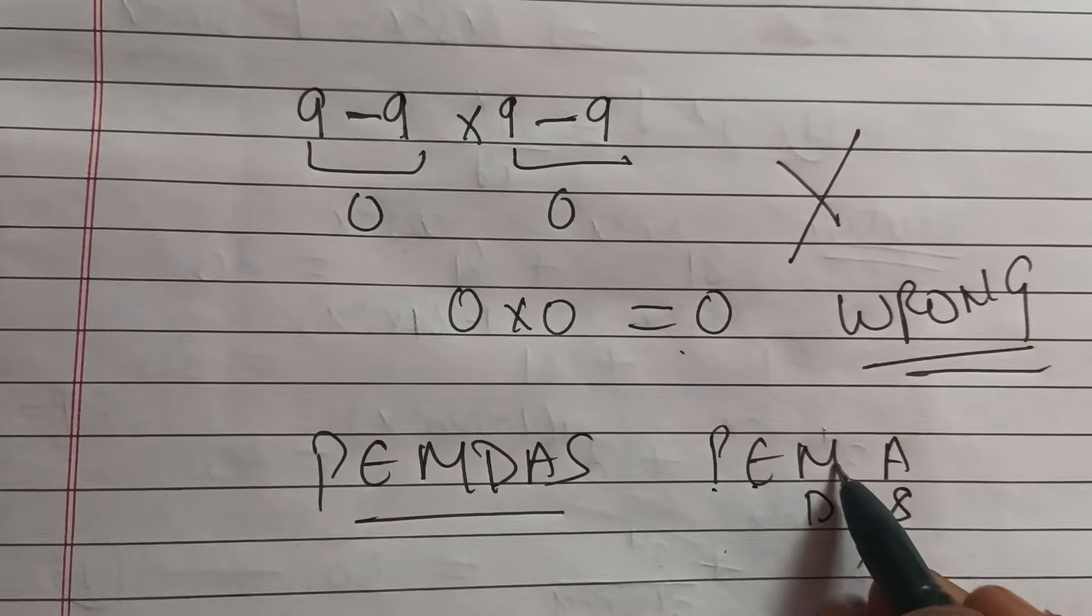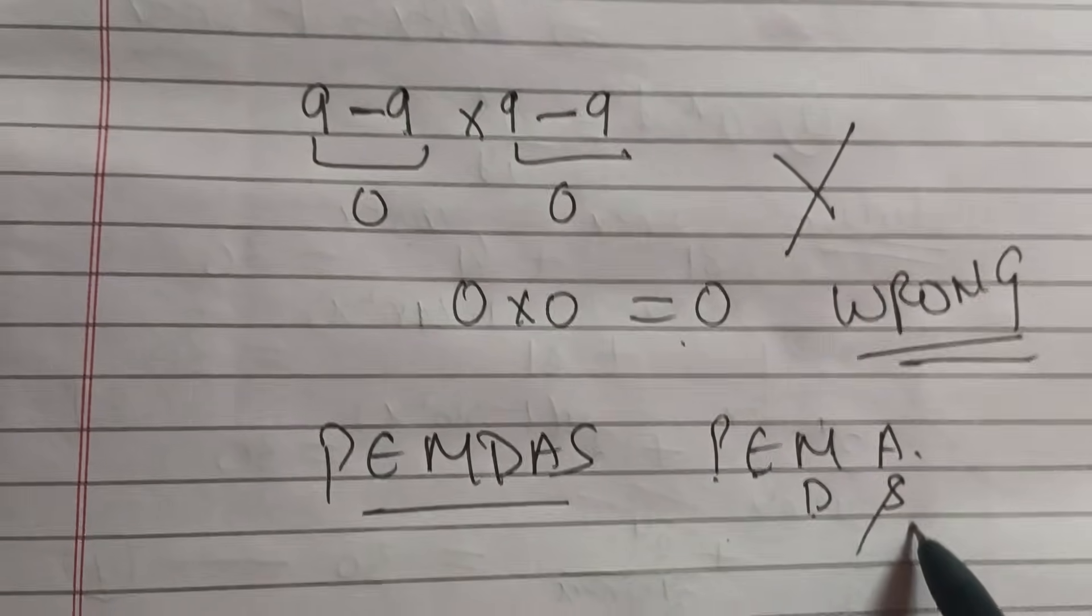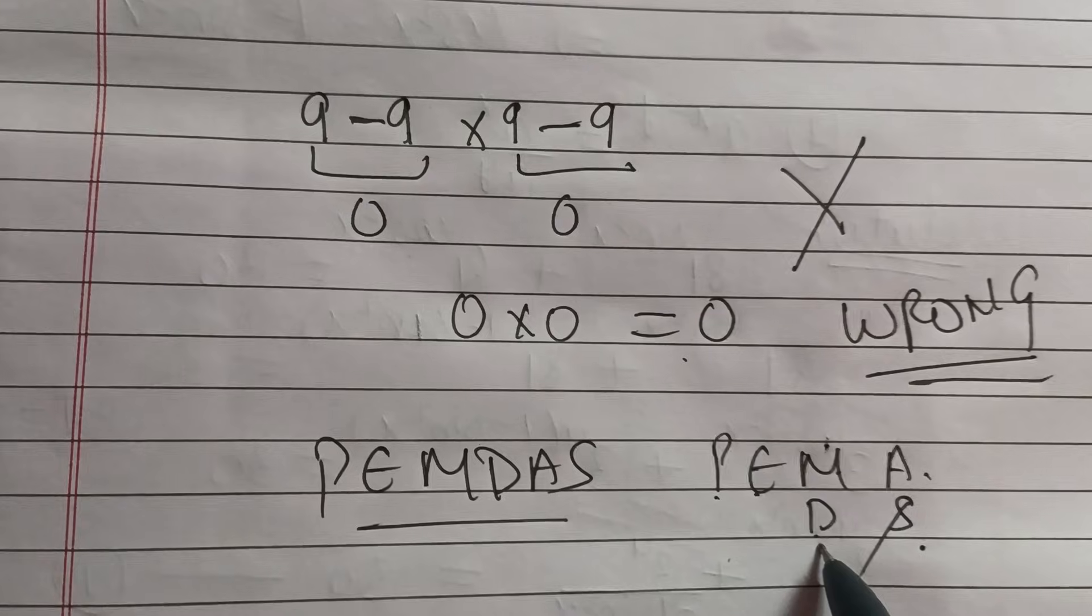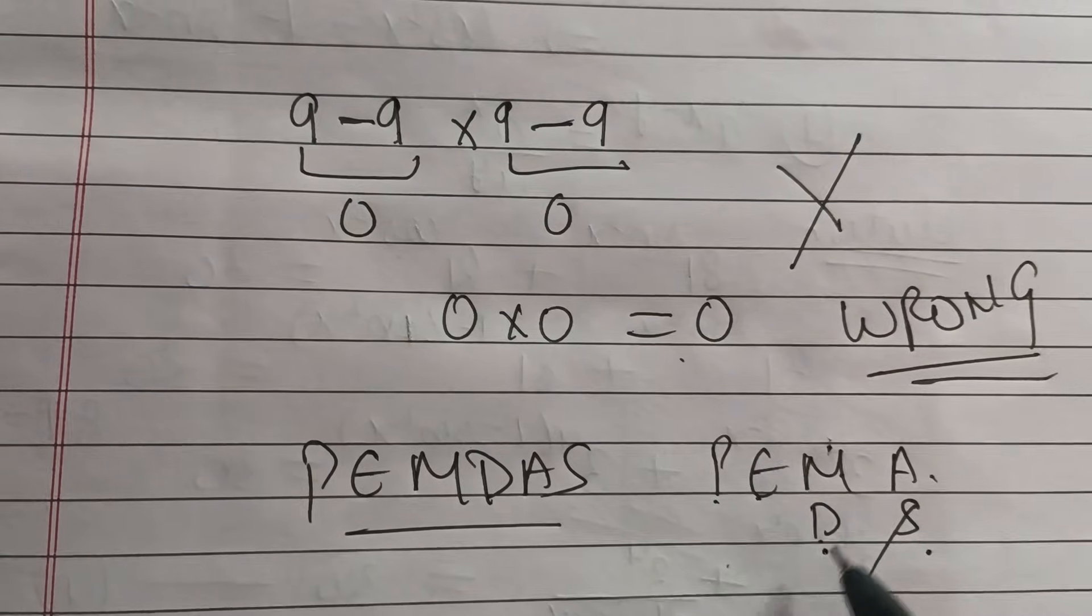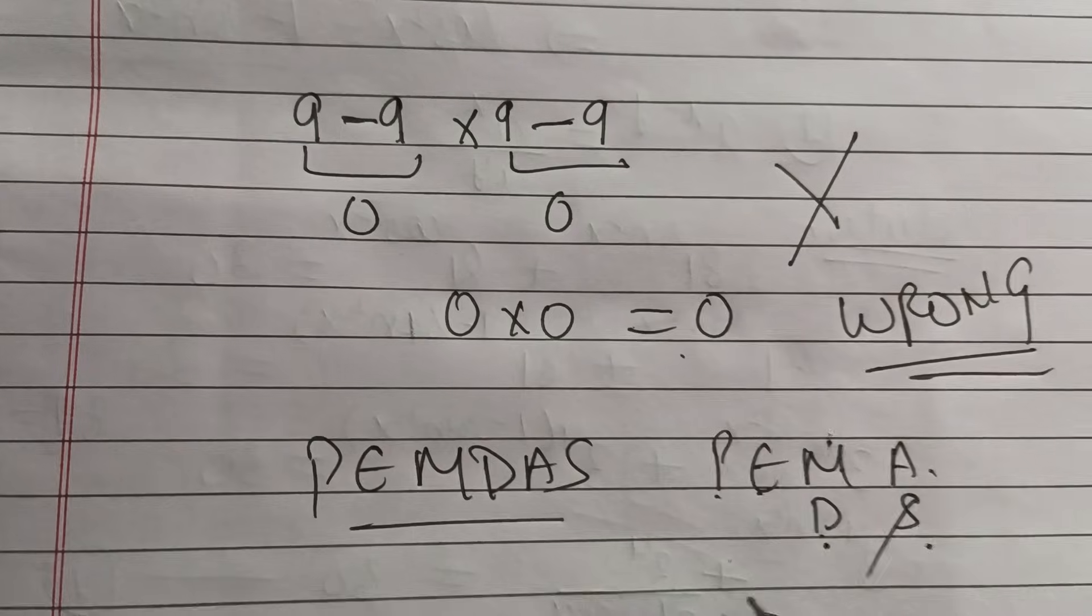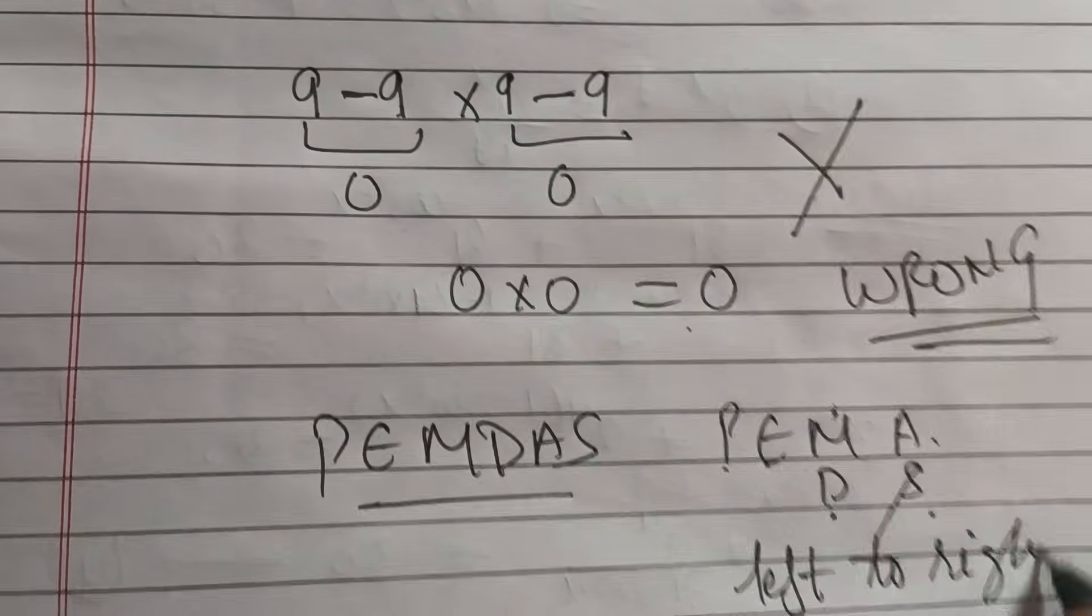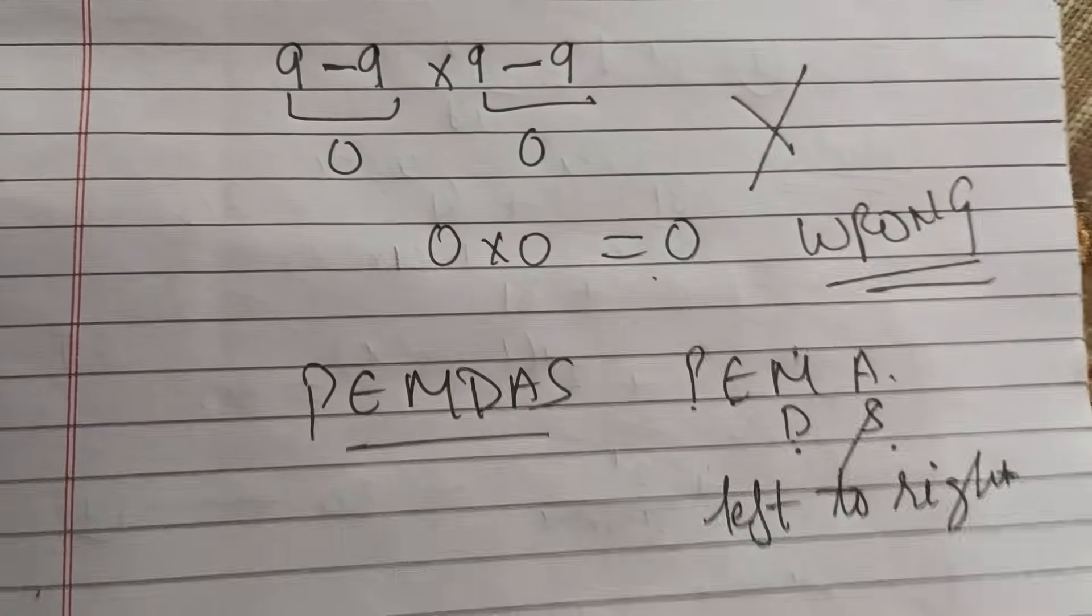P is parenthesis, exponent, multiplication, division, addition and subtraction. Multiplication and division are having same order. But we have to solve them from left to right. If they are multiple multiplication or division, then we have to solve them from left to right.